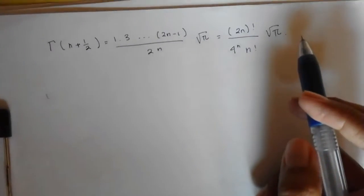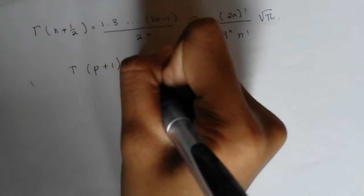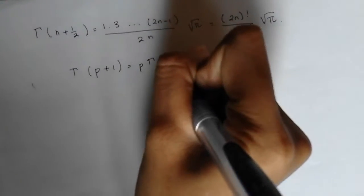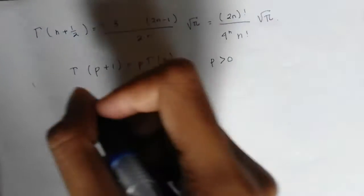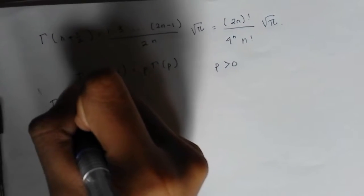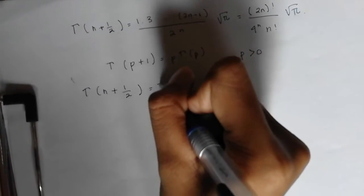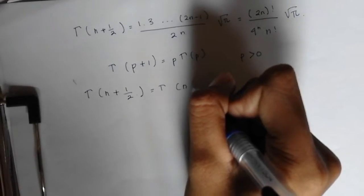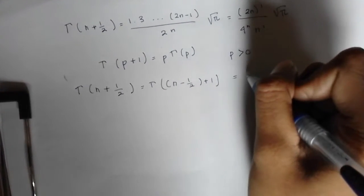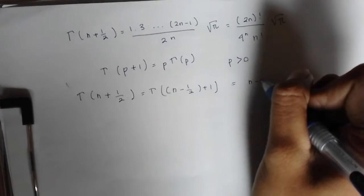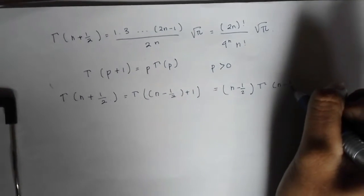We are going to use the fundamental property of the Gamma function: Γ(p+1) is equal to p times Γ(p), for any p greater than 0. So we are going to have Γ(n + 1/2 + 1) is equal to Γ(n - 1/2 + 1), which is equal to (n - 1/2) times Γ(n - 1/2).